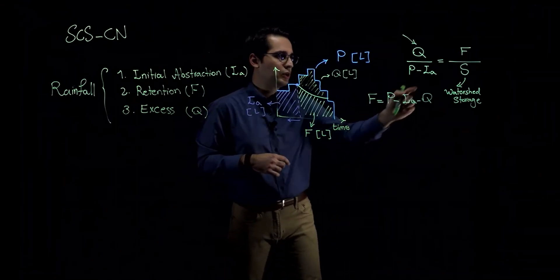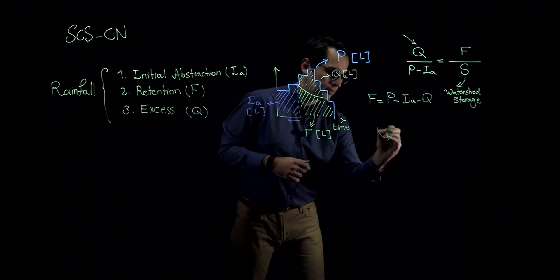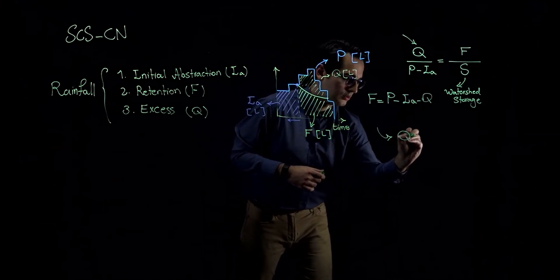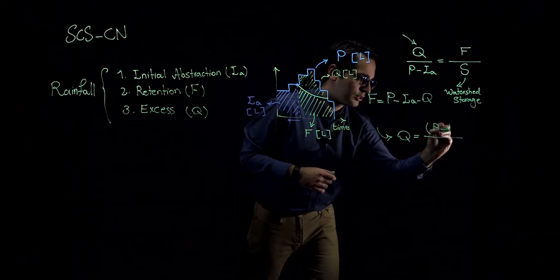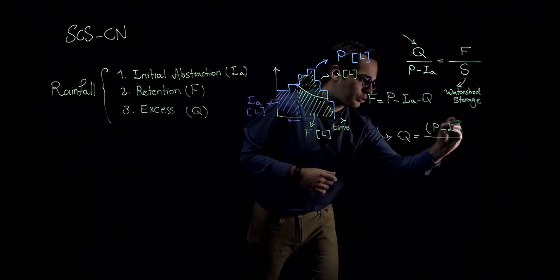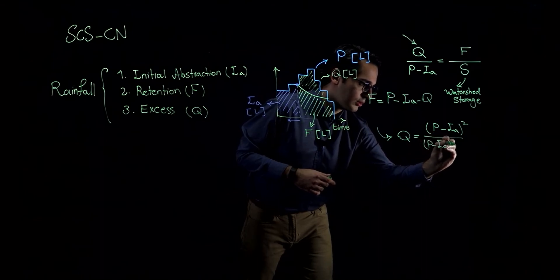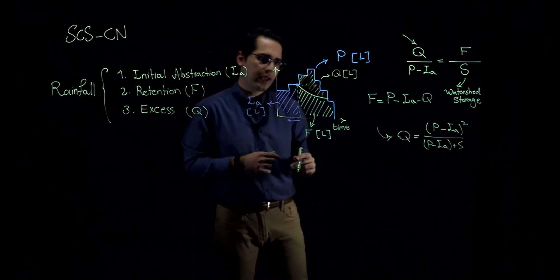Take this and put it in this equation and write it in terms of Q. The equation will become, basically we are eliminating F, so Q will be equal to (precipitation minus initial abstraction) to the power of 2, divided by (precipitation minus initial abstraction plus S), which is watershed storage or potential storage.